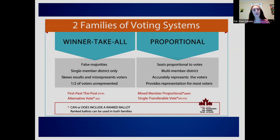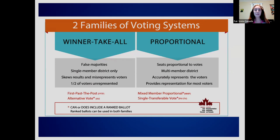One of the main takeaways from this webinar is that there are two broad families of voting systems: winner-take-all systems, also sometimes called majoritarian systems, and proportional systems. There are many different variations under each family. Also worth noting: either family can include systems that use a ranked ballot. A ranked ballot is not a voting system — it's just a tool — and it can be used in both proportional and winner-take-all systems.